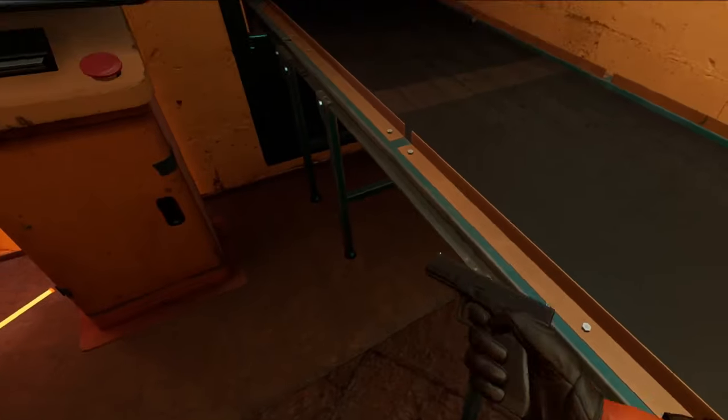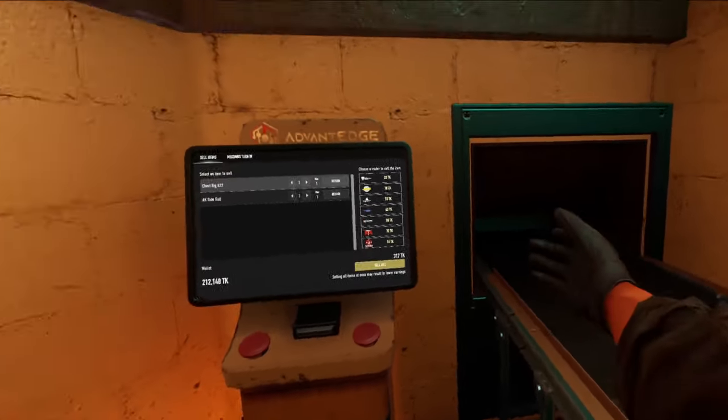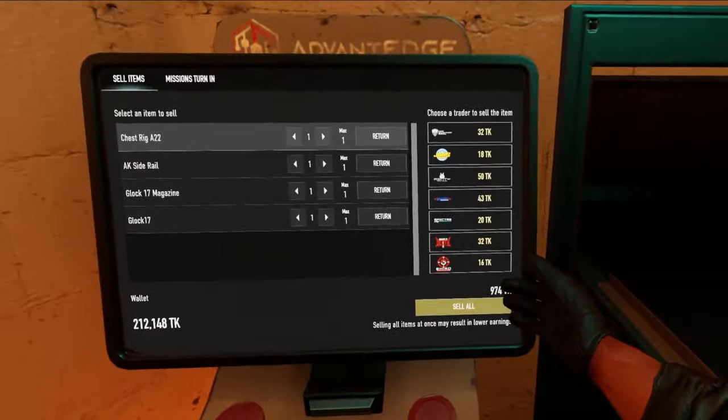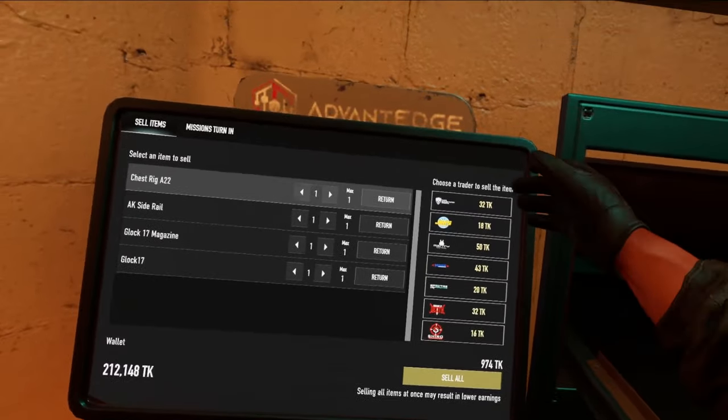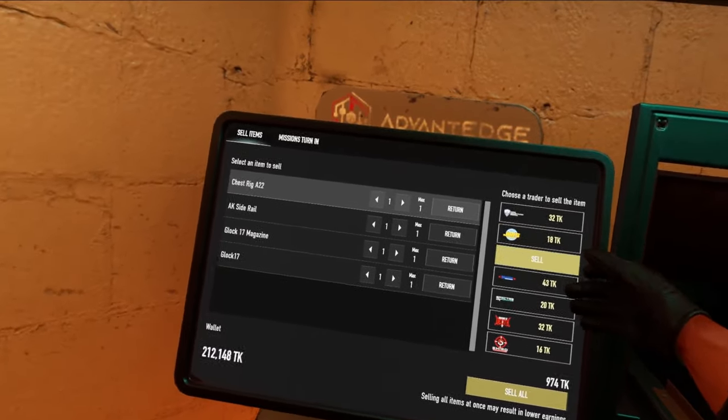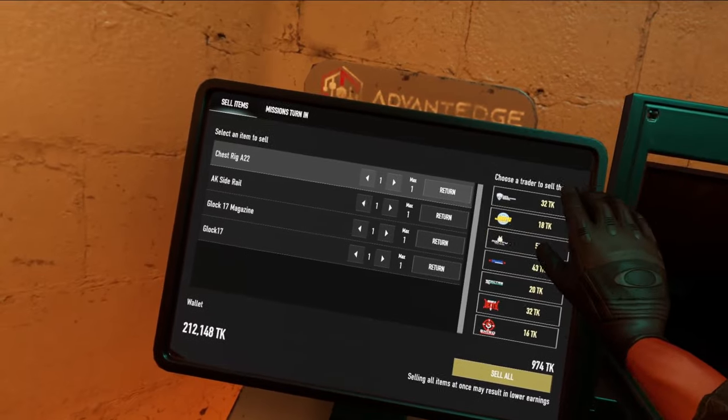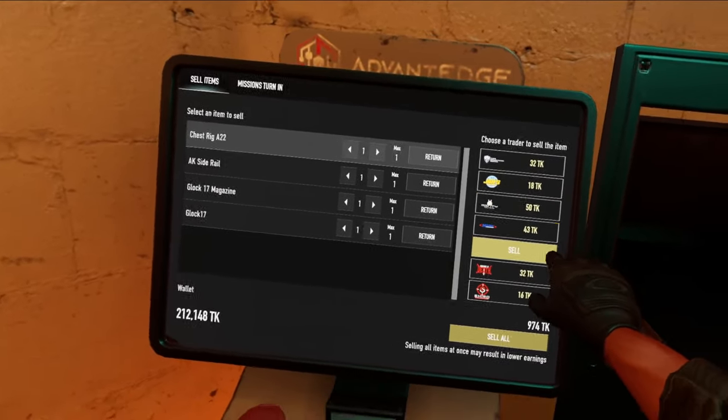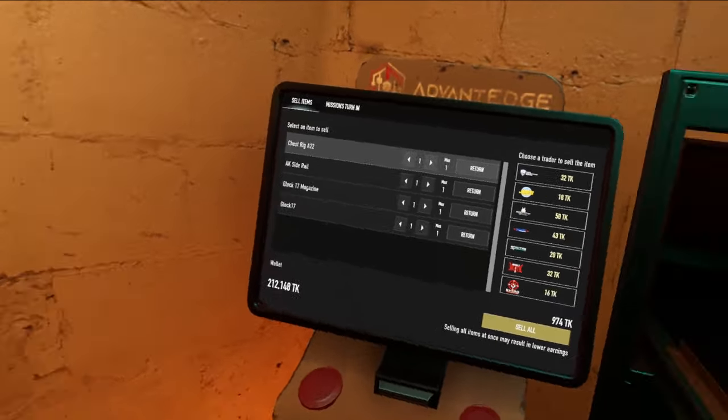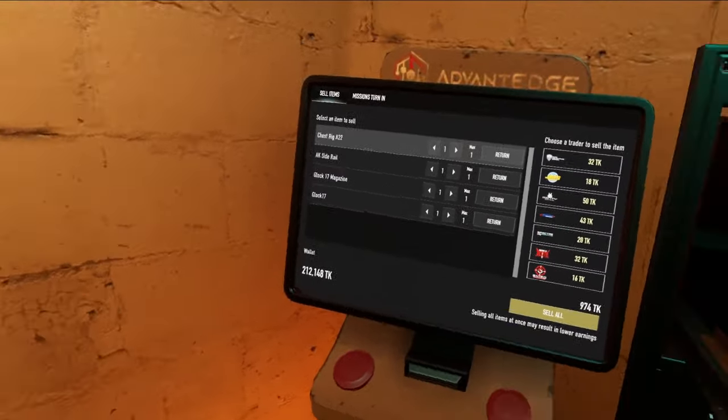So if I took this and threw it on there, the conveyor will take it into there. You can see it'll show up on here with a list of options. You want to make sure that you are selling to the actual distributor that you want to level up because it will give you reputation toward their actual leveling system.